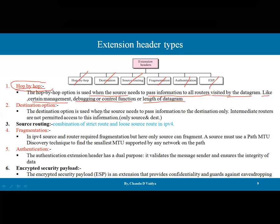Destination option is used when the source needs to pass information to the destination only — when intermediate routers are not permitted to access the information. Like a wrapped gift that intermediate nodes should never tamper with or see, the additional information is saved in the destination extension header so only the destination can see it. Source routing is a combination of strict source route and loose source route in IPv6 — offering both fixed predefined routes and alternative paths.